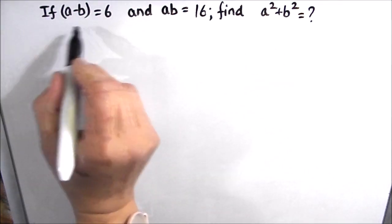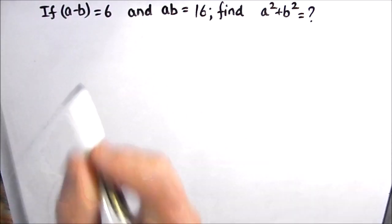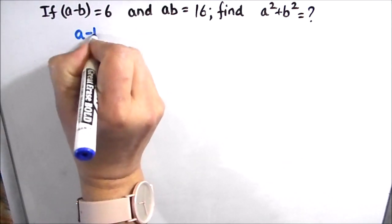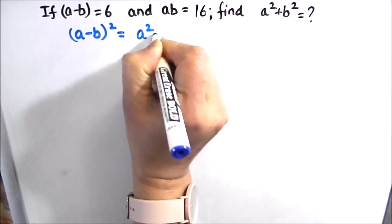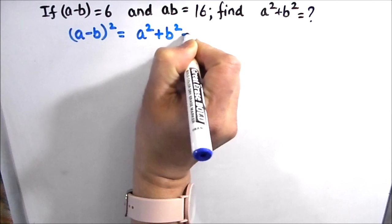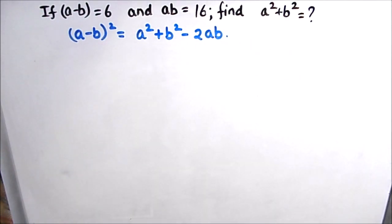Here, as A minus B is given, we can make use of the identity (A - B)² which is equal to A² + B² - 2AB. So this is the identity we are going to use.